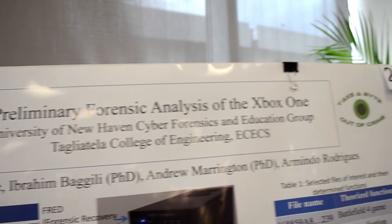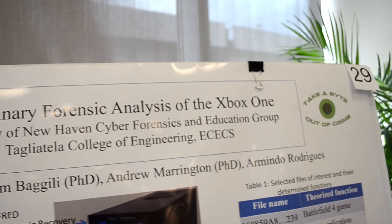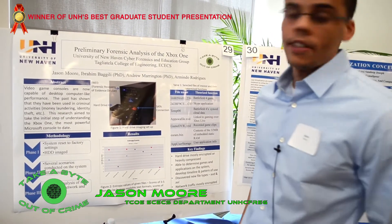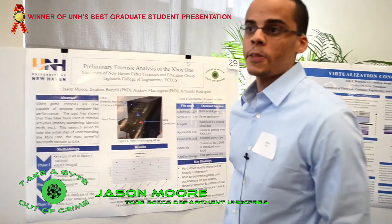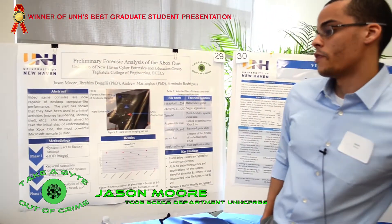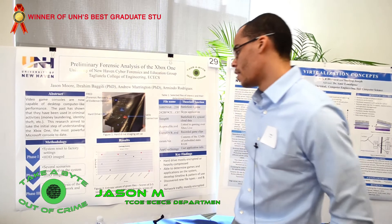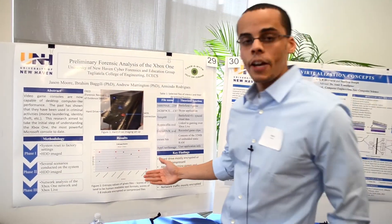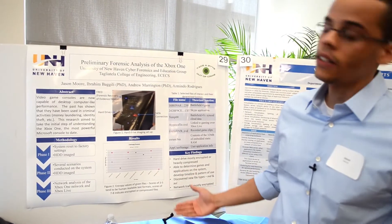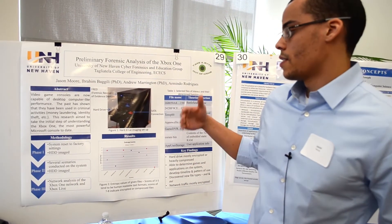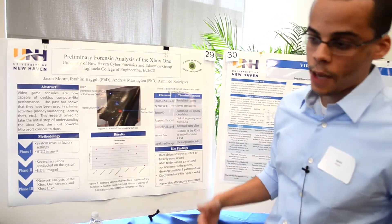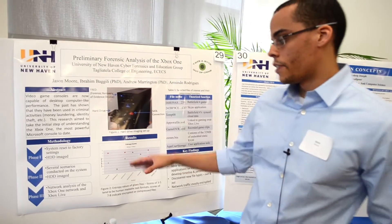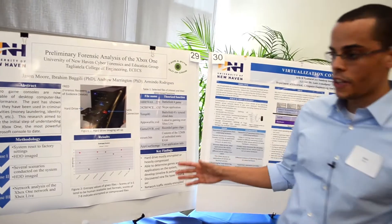Here we have a preliminary forensic analysis of the Xbox One, where we wanted to see what we could find from an Xbox forensically if needed for an investigation. Basically, what we did was we set the hard drive back to factory settings and imaged it, put it back in the Xbox, ran some scenarios, downloaded some games and apps, imaged it again, and then did some network analysis. We then analyzed all this data.